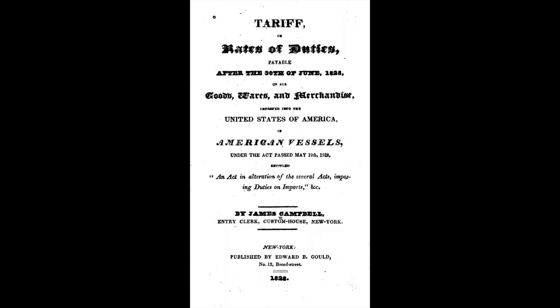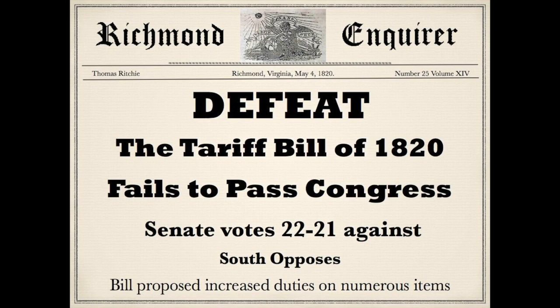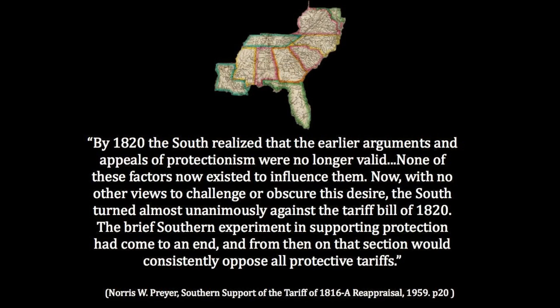In 1820, another tariff bill was presented to Congress, including higher duties on a long list of new items to become permanent. The bill passed in the House of Representatives, with a majority of the South voting against it, but was narrowly defeated in the Senate by two votes. Historian Norris W. Prayer summarized the shift in Southern opinion: by 1820 the South realized the earlier arguments and appeals of protectionism were no longer valid, and now turned almost unanimously against the tariff bill of 1820. The brief Southern experiment in supporting protection had come to an end, and from then on, that section would consistently oppose all protective tariffs.